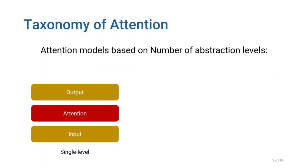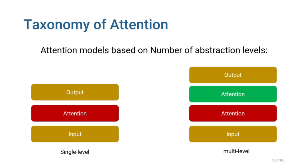Now, we want to classify attention models based on the number of abstraction levels. Most of the times, attention weights are calculated only for the original input sequence. Single level attention is the term used to describe this kind of attention. Alternatively, sequential attention may be applied on several layers of abstraction of the input sequence. The lower abstraction level's output, or the context vector, becomes the query state for the higher abstraction level.